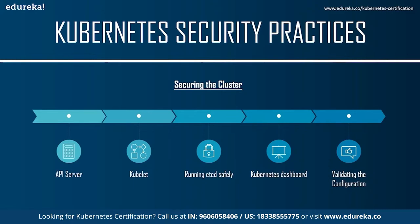The next way to secure the cluster is to run etcd carefully. Kubernetes stores configuration and state information in a distributed key-value store called etcd. Anyone who can write to etcd can effectively control your Kubernetes cluster, and even just reading etcd contents could provide helpful hints to an attacker. Therefore, you need to ensure that only authenticated access to etcd is permitted.